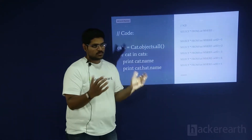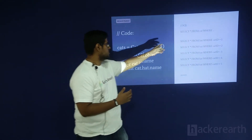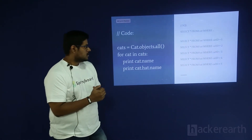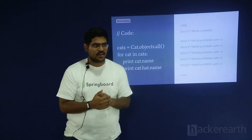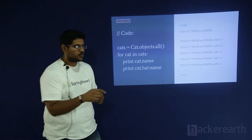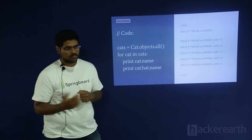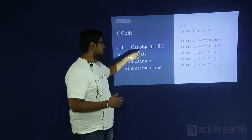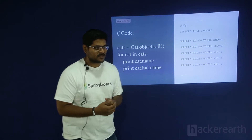The query right here is going to do the obvious thing — it's going to SELECT star from cat. But here is the tricky bit: when you come to cat.hat, Django is going to realize it needs the hat object and go look at the DB. It's going to do that for all N cat objects that you look up — hence the term N+1 problem. You should have had one query, but you end up having N more queries, where N is the number of cats in your database.